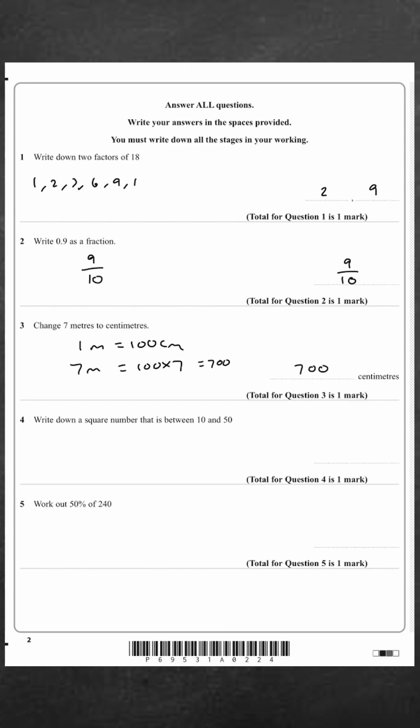Question number four, write down a square number that is between 10 and 50. Square numbers are just numbers that are a number squared. So 1, 4, 9, 16, 25, etc. And 16 is between 10 and 50.